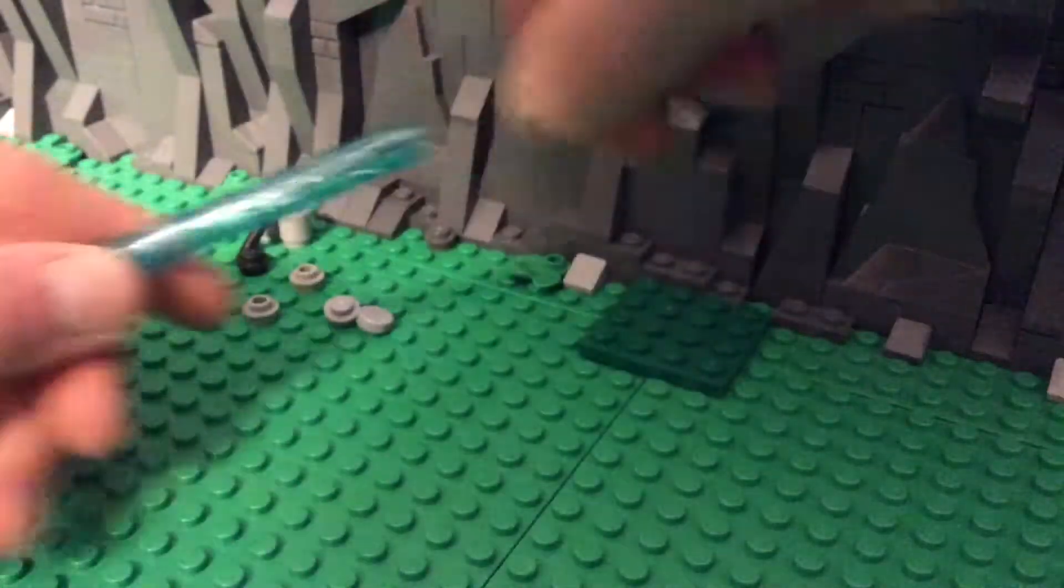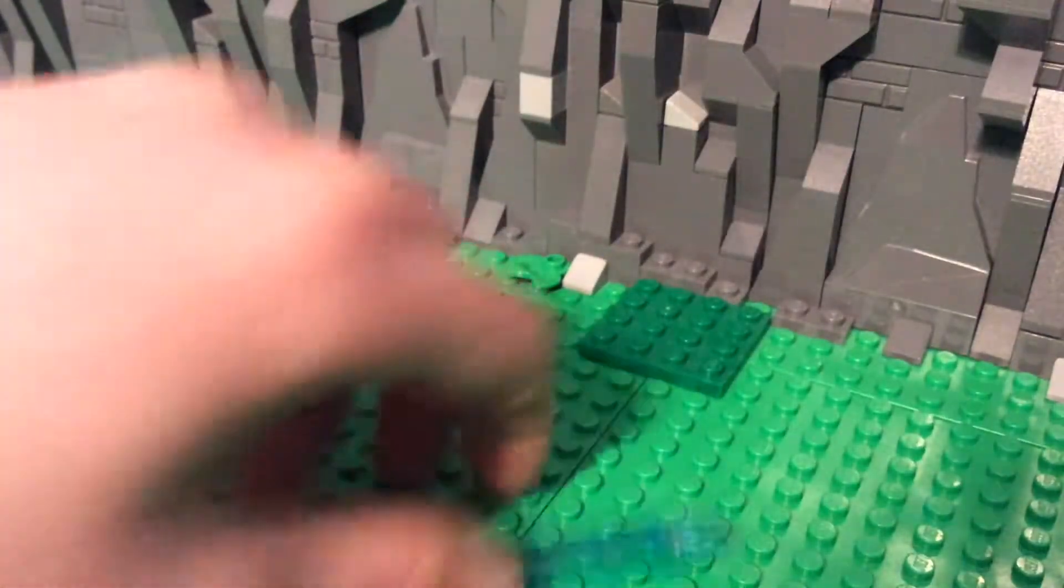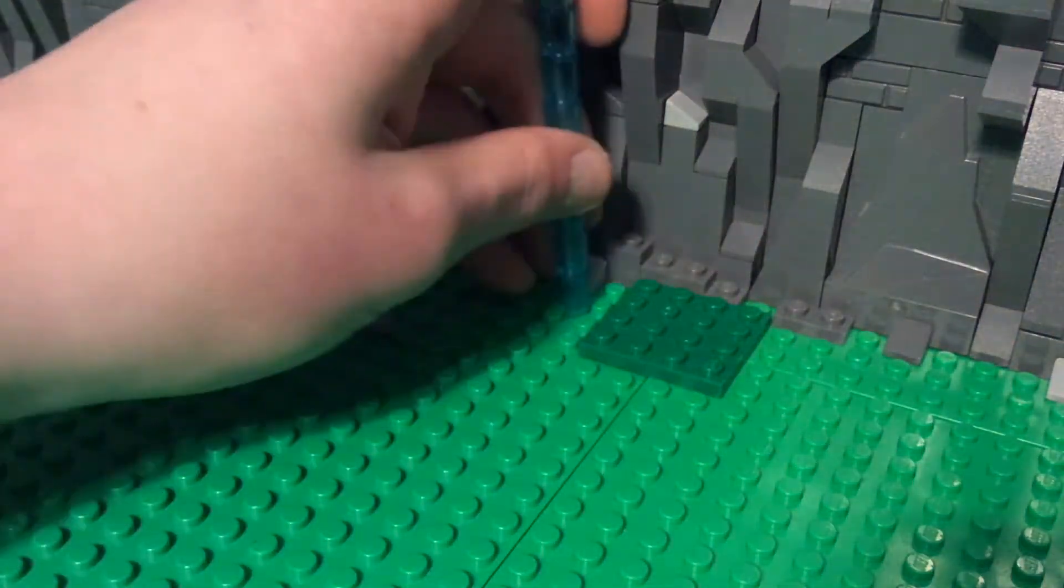And then you put this cone piece on like that. That's the big part of the lightsaber.